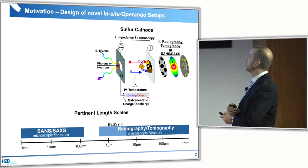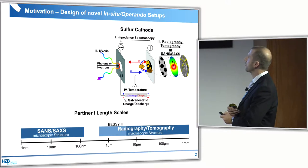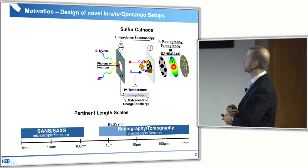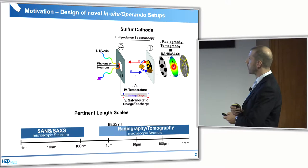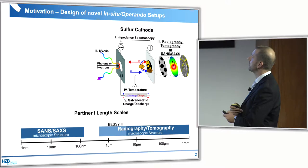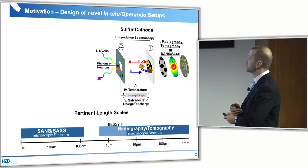We can make simultaneously more than two measurements. For the sulfur cathode, for example, we have now built up a cell where we can run impedance spectroscopy and galvanostatic charge-discharge, but also temperature. We can use photons or neutrons as probes while the cell is operating — small angle neutron scattering, radiography, or tomography. This is the basic idea of this whole setup.